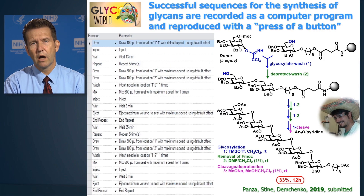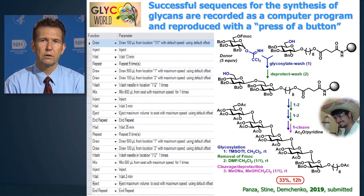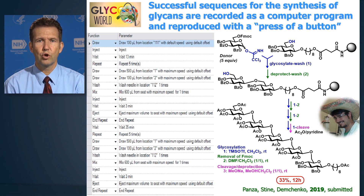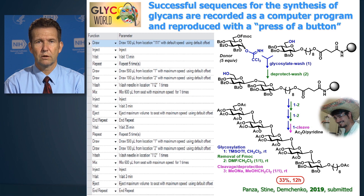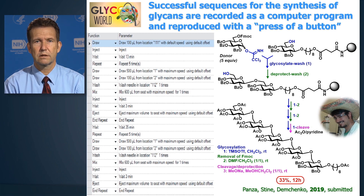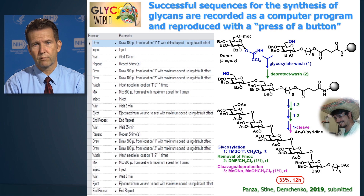This slide highlights the synthesis of an oligosaccharide performed in 12 hours in a completely automated fashion — what we call the press of a button. The student sets up all the vials in the auto-sampler, presses the button, goes home, comes back to the lab, and finds the compound collected in the flask and ready for further transformation.